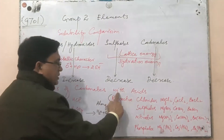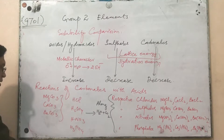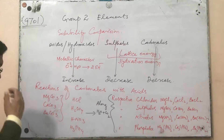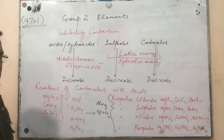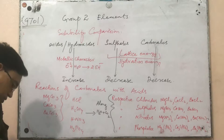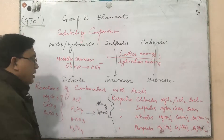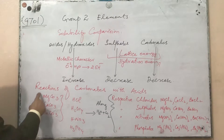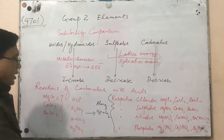Now, reactions of carbonates with acids. If we consider Group 2 element carbonates — for example, magnesium carbonate, calcium carbonate, strontium carbonate, barium carbonate — we can easily understand that all these carbonates react with acids and produce salt along with water and carbon dioxide. For example, if we take magnesium carbonate, calcium carbonate, barium carbonate and react these carbonates separately with HCl, H2SO4, nitric acid, or phosphoric acid, then along with water and carbon dioxide, they will produce the respective salts.